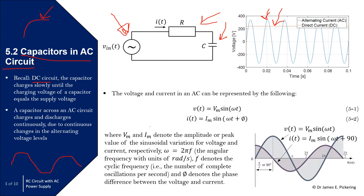The voltage and current in an AC circuit can be represented by the following. V(t) is equal to V_M sine(ωt), where V_M denotes the amplitude or peak value of the sinusoidal voltage variation. Omega (ω) represents 2πf, where f is the frequency — the number of complete oscillations per second. So omega here is effectively the angular frequency with units of radians per second. You can see on the graph here: I've got V(t), the voltage, shown as the slightly blue line.